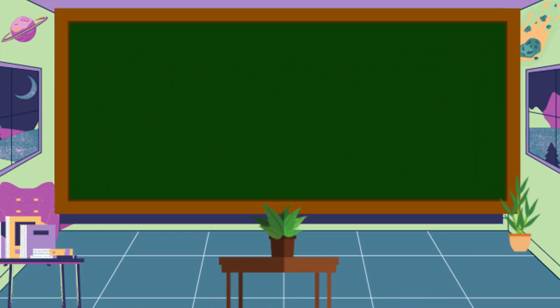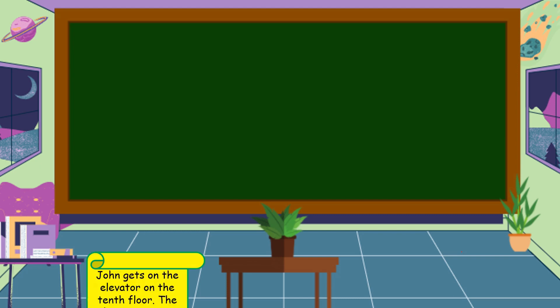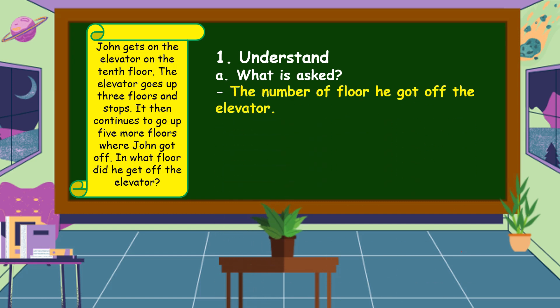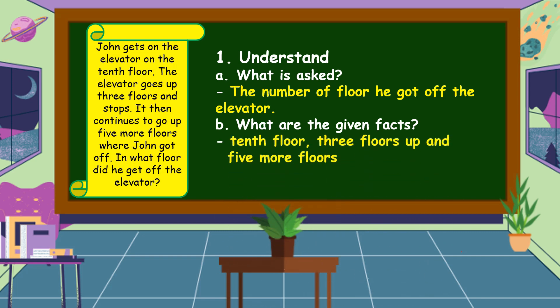To answer our problem, we are going to use the four-step plan. First, we are going to understand the problem. What is asked? In this problem, it is asking for the number of the floor he got off the elevator. What are the given facts? The given facts in this problem are the 10th floor, 3 floors up, and 5 more floors.